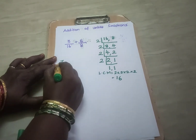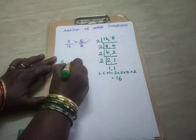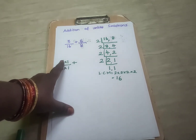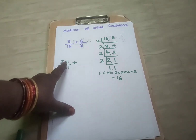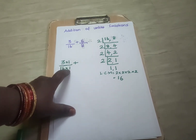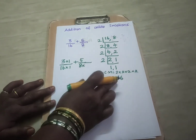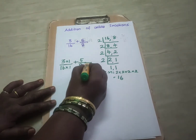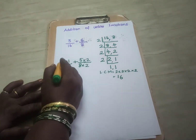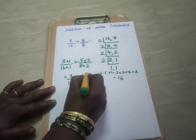Now write the first fraction 3 by 16. How many times does 16 go in 16? It is 1 time. When you multiply the denominator by 1, you have to multiply the numerator with the same number to get the equivalent fraction. So 16 into 1 and 3 into 1. Next fraction is 5 by 8. How many times does 16 go in 8? It is 2 times. So the same 2 should be multiplied to the numerator also. After multiplying: 3 into 1 is 3 by 16, plus 5 twos are 10 by 8 twos are 16.